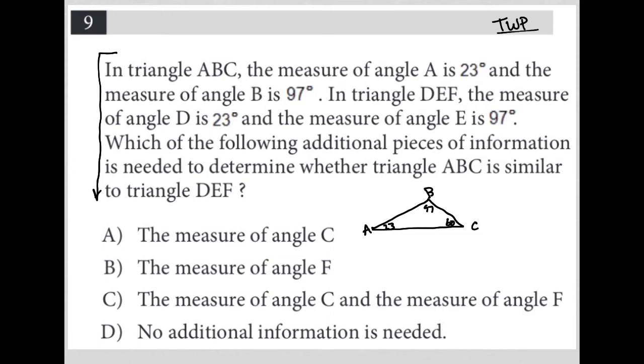The next sentence says in triangle DEF, the measure of angle D is 23 and the measure of angle E is 97. This sounds like basically another triangle with the exact same measurements. So this is D, which is 23, and E, which is 97, and therefore F must be 60.